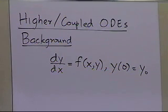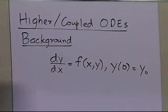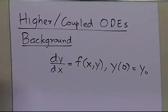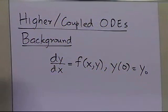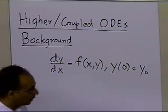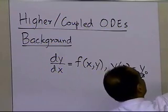How do we use Runge-Kutta second order, fourth order, and Euler's method to solve higher-order and coupled differential equations? In order to do that, I'm going to take an example and show you how you can reduce coupled ordinary differential equations into first-order differential equations so that you can use your Runge-Kutta and Euler's methods.